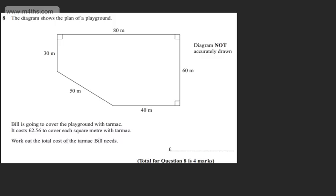The first thing I'm going to do is split this up into a rectangle and a trapezium. So if I draw a straight line across there and add the missing dimensions, we can then work out the areas.